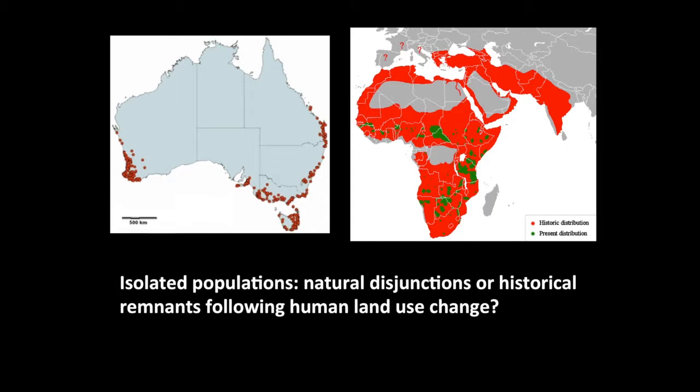Gathering the evidence for that is another matter entirely. These maps illustrate species we're not talking about — kangaroos, lions and others — just to make the point that there is a difference. Natural disjunction is very important for distinctness, because if the distinctiveness that emerges is the result of human-mediated fragmentation of populations — historical remnants — that is not the same as distinctness arising from natural disjunctions.